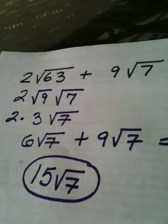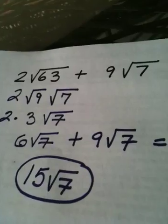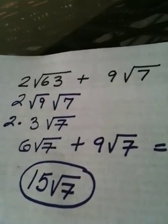So, whenever the problem is not able to be started, you know, you can't start it because the terms are not like, you break down one of the radicals and then you're able to begin the problem. Okay? Let's look at this example.